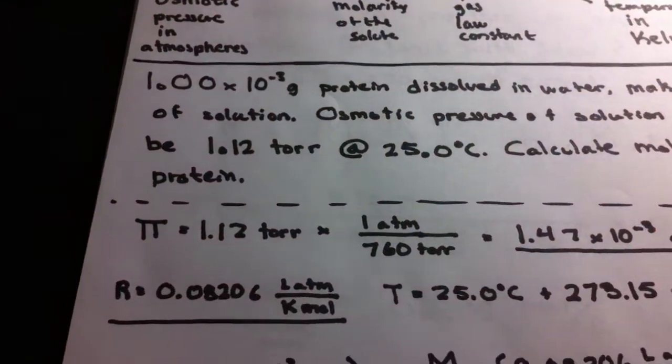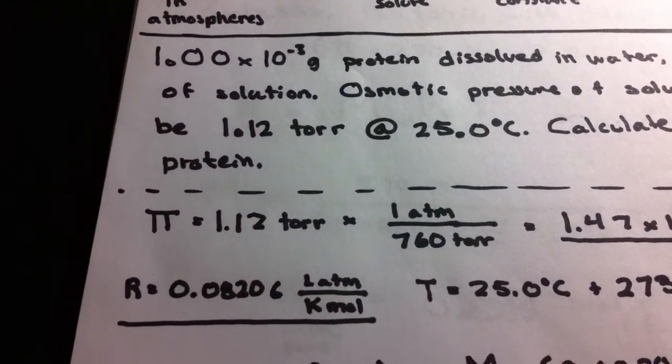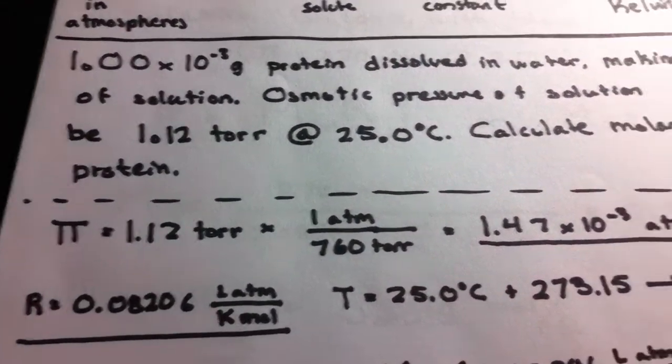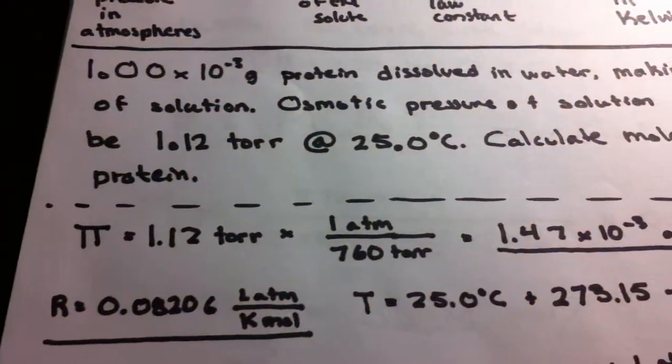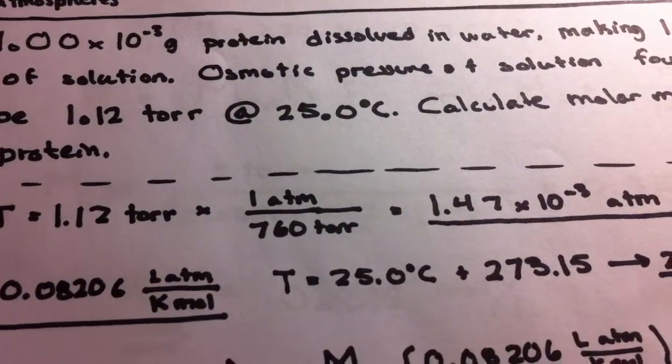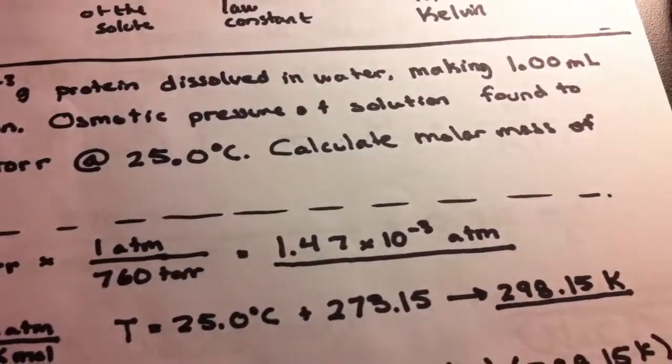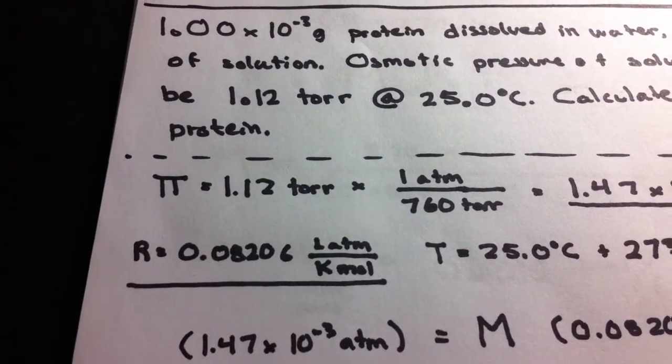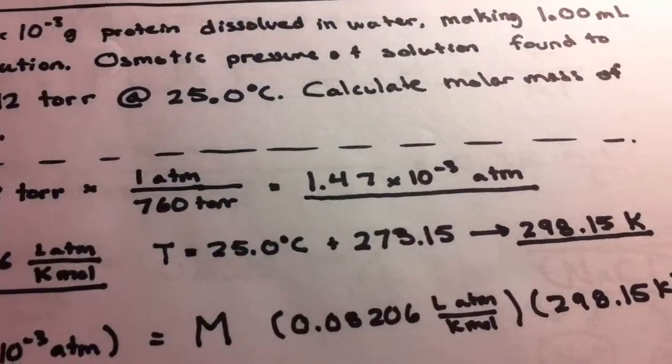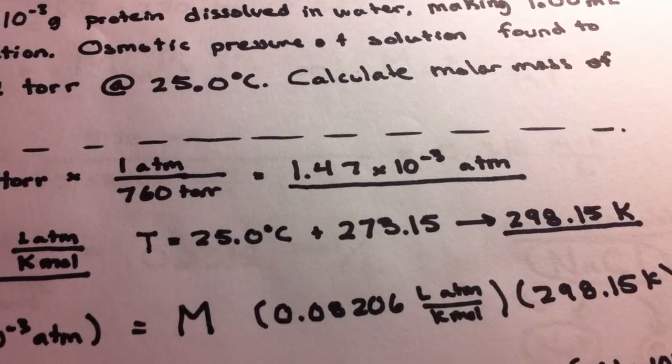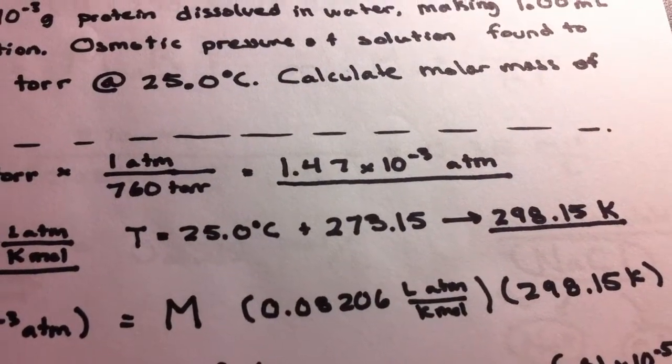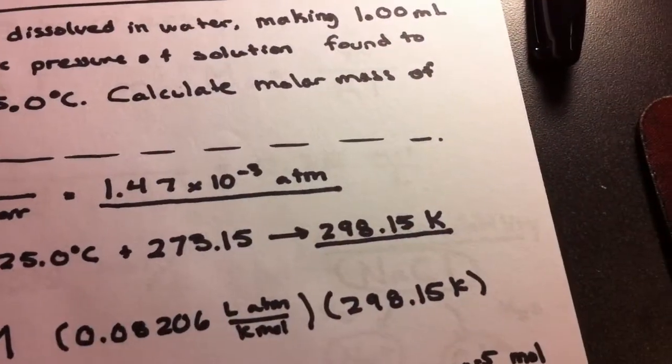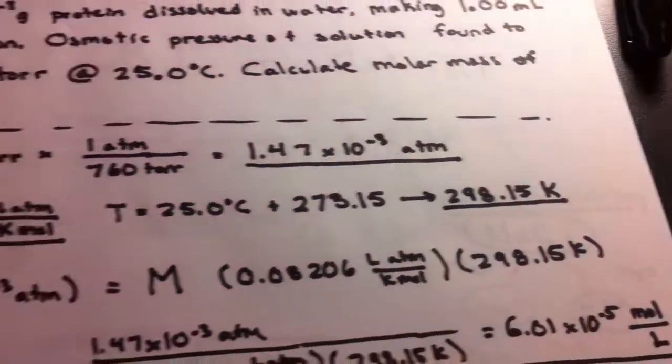Let's start with what we're given. The osmotic pressure is in torr, so we convert that to atmospheres using the conversion factor 1 atm per 760 torr. For R, it's 0.08206, and T is 273.15 plus the degrees Celsius value, which equals our Kelvin temperature.